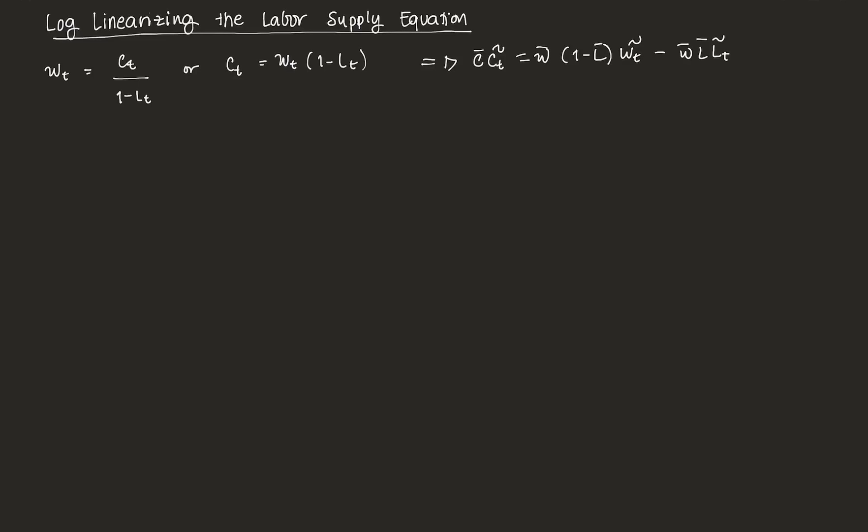So we have Wt which is wage is equal to Ct consumption times 1 minus 1 over Lt labor. So here we have the labor supply equation. And just simplifying it with respect to Ct, we can get this form here. And what eventually we want to get is this form here.